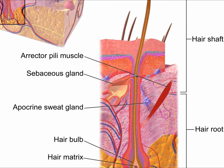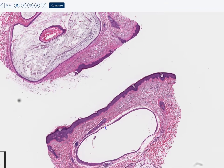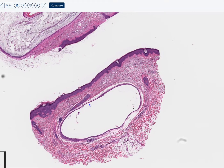Vellus hair cysts are thought to arise because there's occlusion of the infundibular portion, and that leads to dilation and eventual eruption. So how do I identify vellus hair cysts?